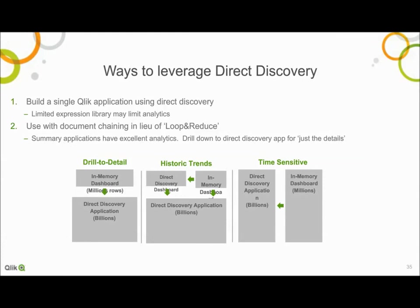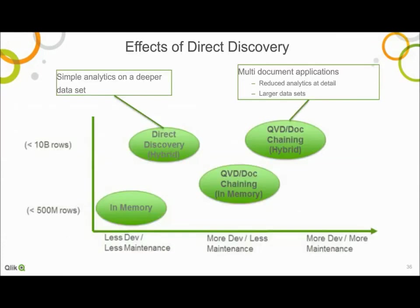Now let's add both of those options onto our growing diagram of solutions. In the top left, we have a new class of deploying simple analytics over large data sets using Qlik Direct Discovery with a single application. In the top right, doing advanced analytics on a summary application, we can segment the detail using Direct Discovery to provide detailed data viewing capabilities over those detailed records — not for sophisticated analysis, but for simple data viewing.